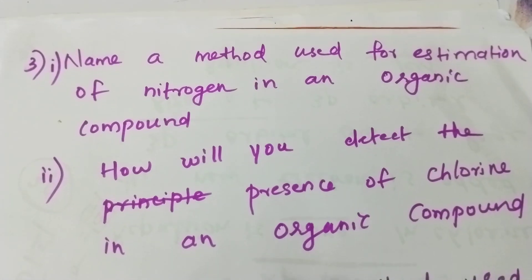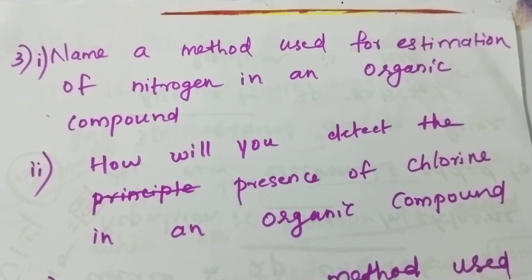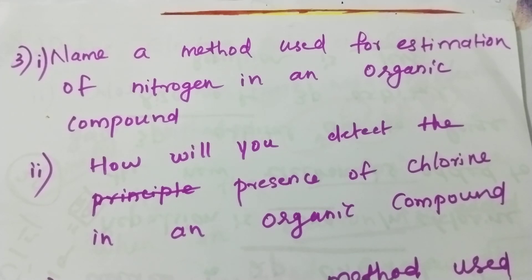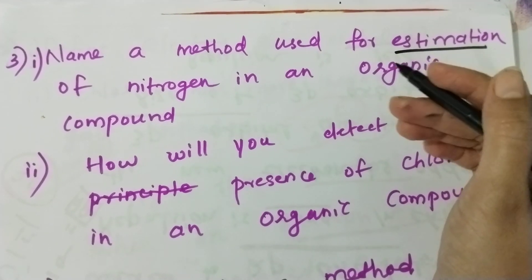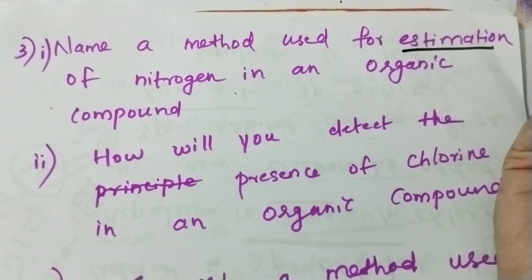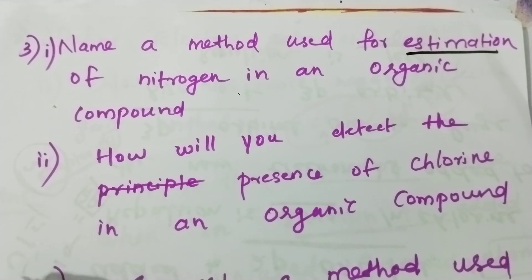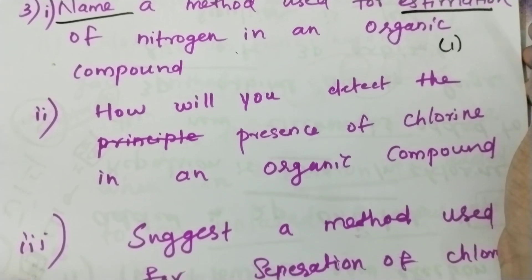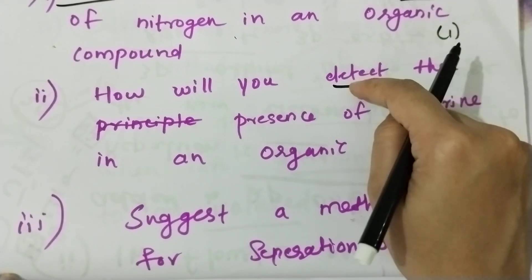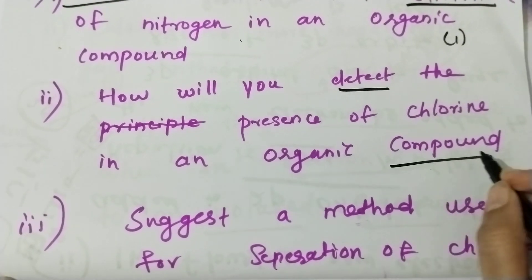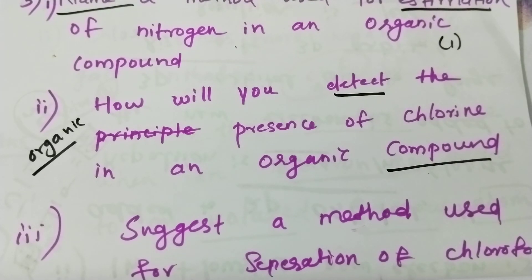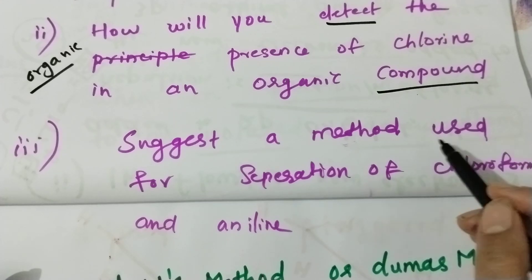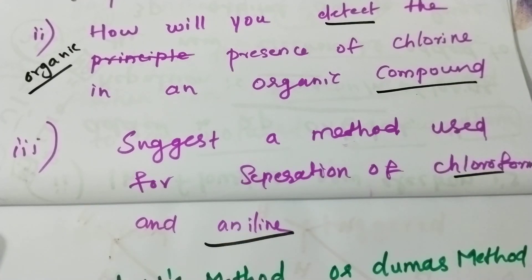Chapter 3: This video is used for estimation of nitrogen in an organic compound. Nitrogen is estimated by Kjeldahl's method and Dumas method. Next: how will you detect or estimate the presence of chlorine in an organic compound? This is very important for organic chemistry. There is no chlorine in an organic compound initially – we will detect it.